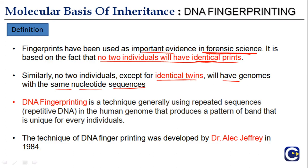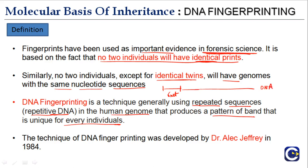DNA fingerprinting is a technique generally using repeated sequences — or repetitive DNA — in the human genome that produces a pattern of bands unique for every individual. Only about 2% of DNA codes for protein; the rest is non-coding, and a lot of these sequences are repeated. For example, a sequence of six nucleotides can be repeated multiple times along a DNA strand — this is called repetitive DNA.